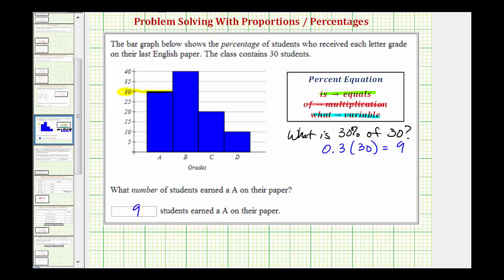So looking at our basic question here, notice how the first word is what, and therefore we write down the variable or the unknown. Let's use n for the number of students.